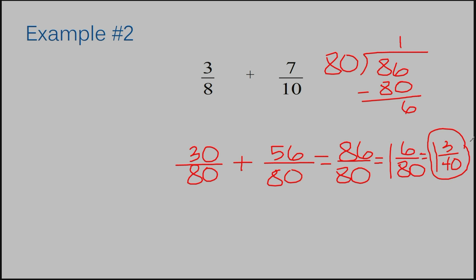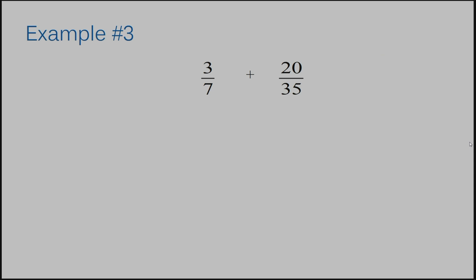Let's move on to example number three. I have three sevenths plus twenty over thirty-five. I need to get a common denominator. Sometimes when you're dealing with fractions, one of your fractions will already have a denominator that the other fraction can go into. Meaning, you may not have to change both fractions. In this case, seven can evenly go into thirty-five. So, I know that this fraction doesn't need to change.